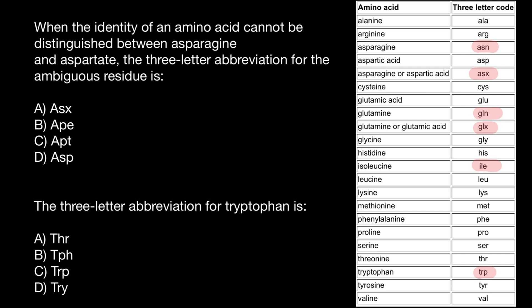Now let's answer our questions. When the identity of an amino acid cannot be distinguished between asparagine and aspartate, the three-letter abbreviation for the ambiguous residue is the first two letters plus X — so the correct answer is ASX, answer A. For the second question, the three-letter abbreviation for tryptophan: remembering that tryptophan consists of two parts, trypta and phan, TR comes from the first and P from the second — the correct answer is TRP, answer C. That's all for today. Subscribe and see you in the next video. Goodbye.